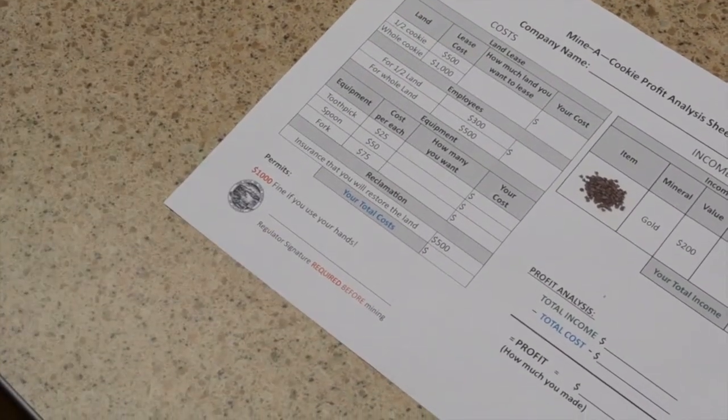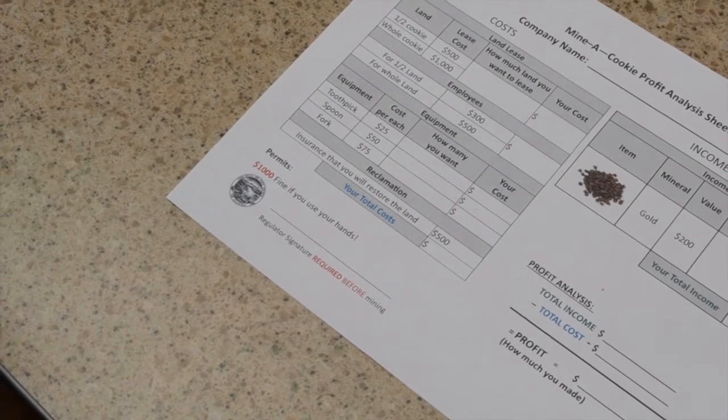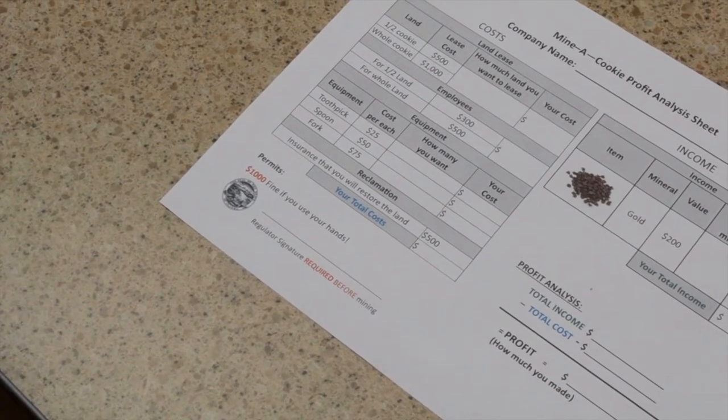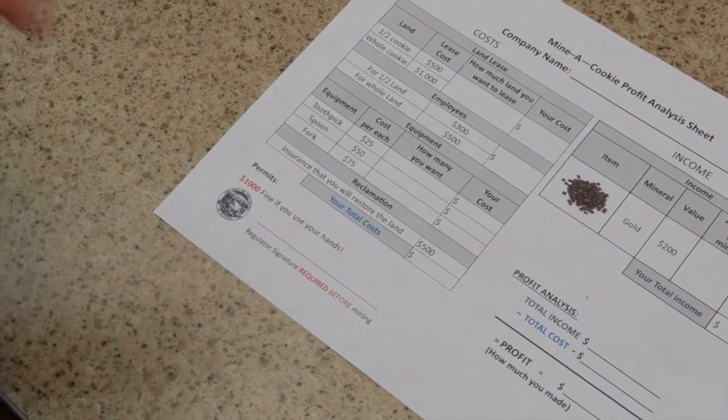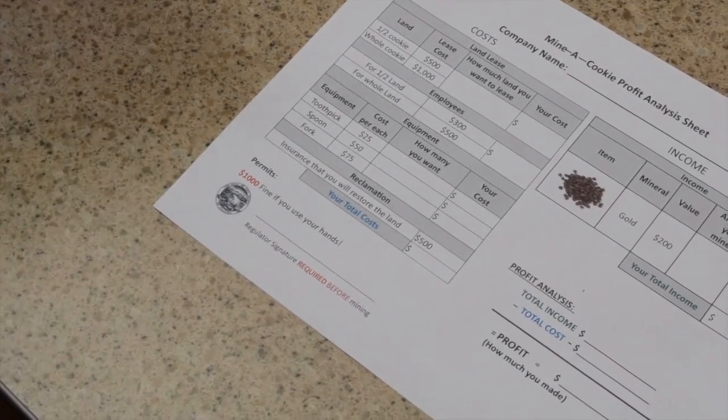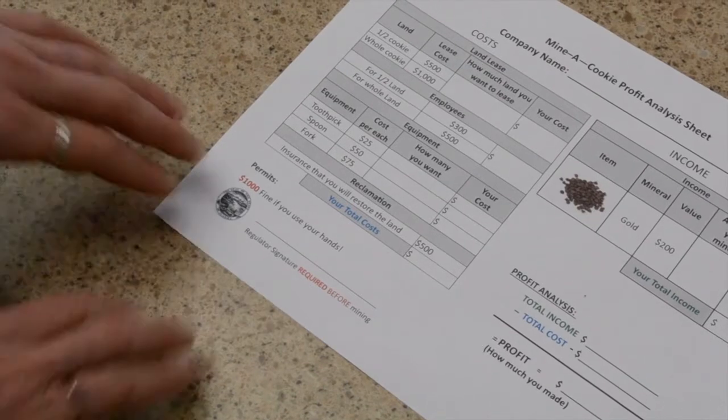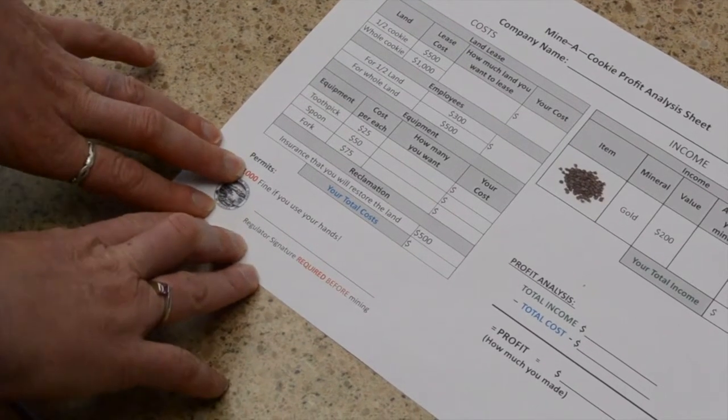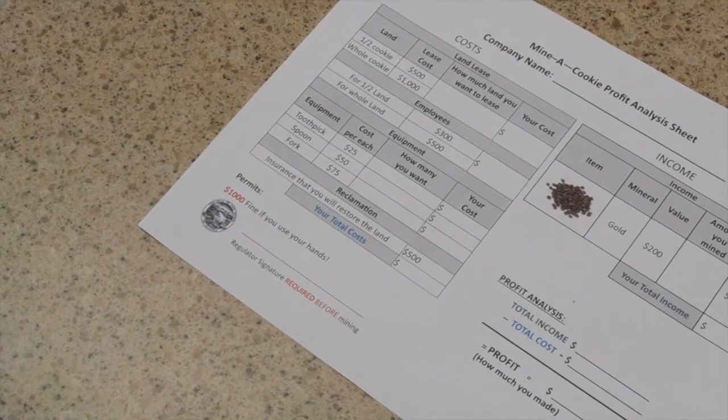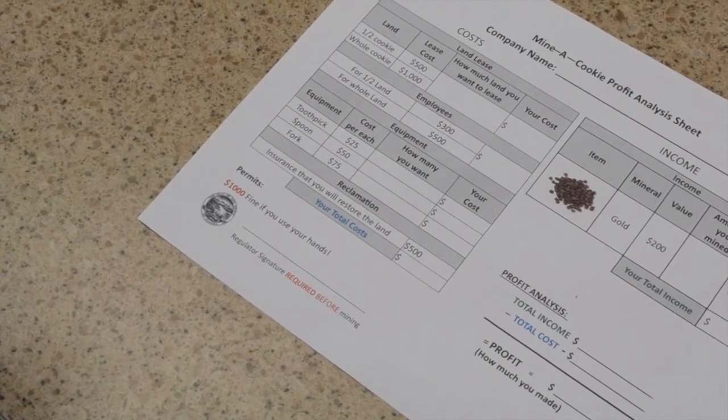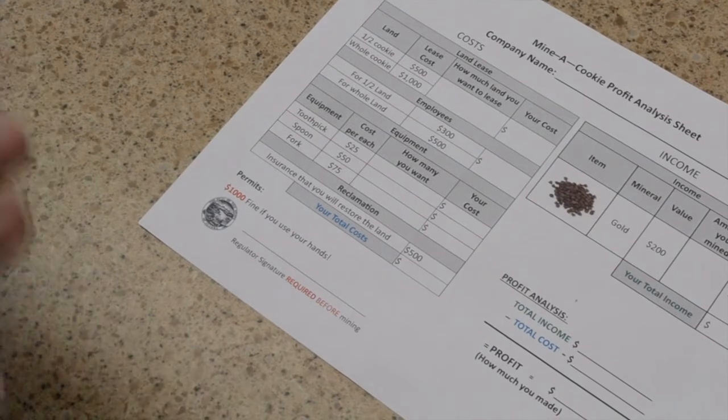And then we talk about permits. So in order to keep them and their environment safe, the two most important things for mining companies, if they use their hands or get frosting on their hands or in their hair or in their mouth, it's $1,000 fine every single time. And then we'll typically also tell them that they need to protect the land around their mining company. So their sprinkles, their frosting, their cookie, their chocolate chips,